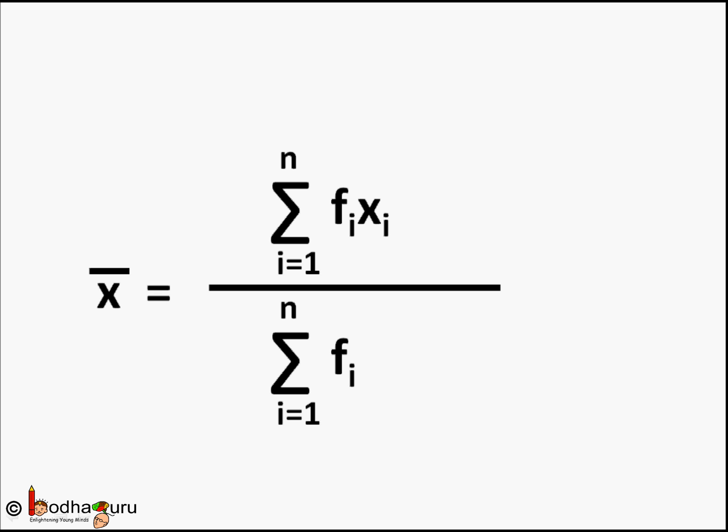And mean is rewritten by x̄. So x̄ equals sigma fi xi divided by sigma fi where i goes from 1 to n. That is all in this video, bye bye.